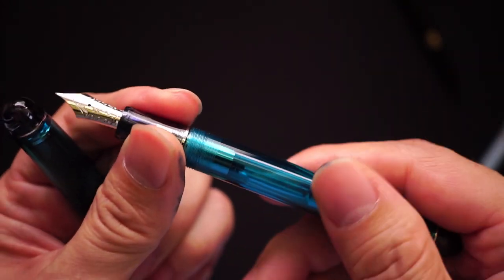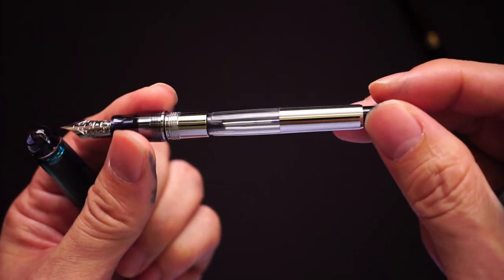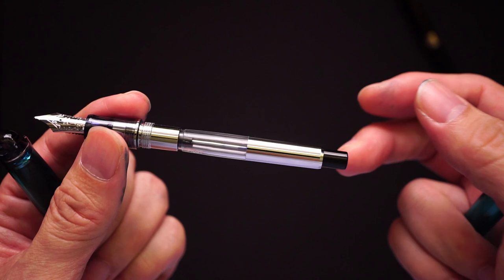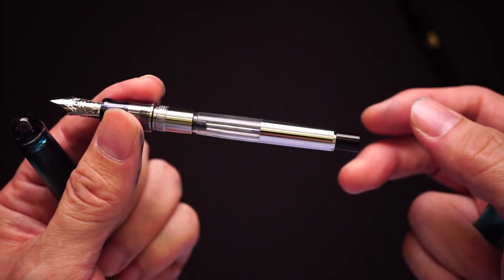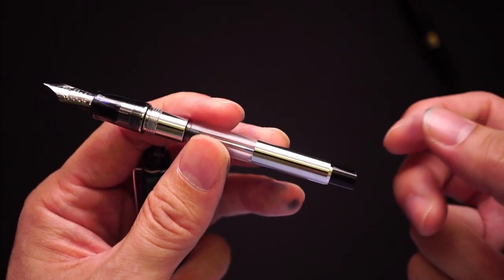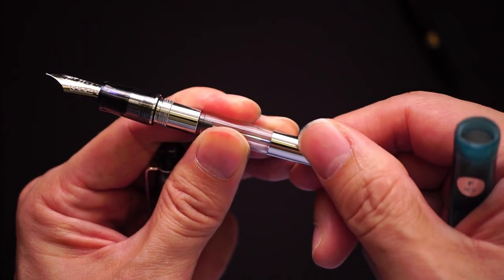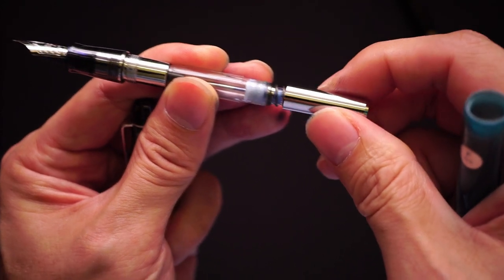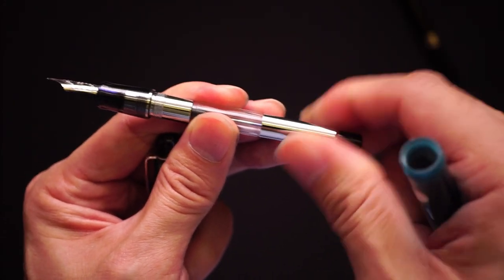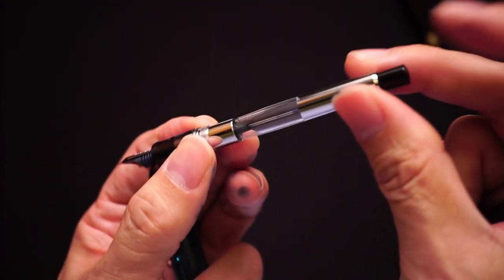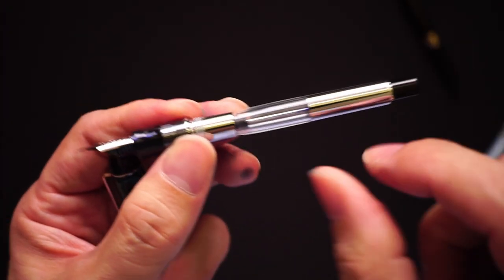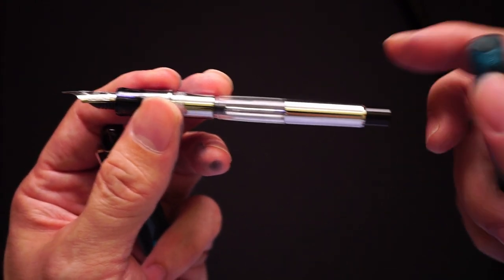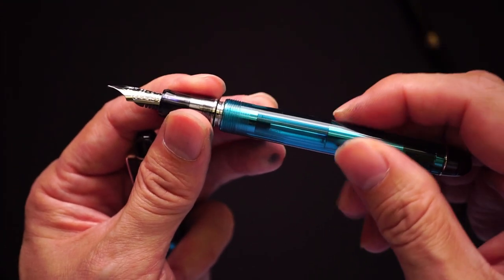Otherwise it's a very good pen. It comes with the CON70, which is a fantastic converter. Lots of people make complaints about this converter that it's difficult to clean out. One thing you can try if you find it difficult to clean out is you can actually unscrew the converter totally, like so, and then you can clean out this pen pretty thoroughly. Easy to fill just by pushing this button, quite a large capacity, about probably one milliliter. I feel it's probably the best converter system out there.